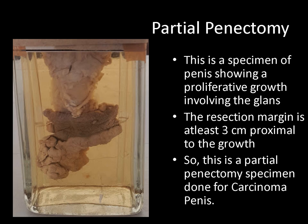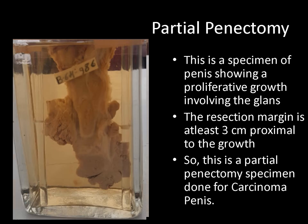The next specimen is a specimen of penis showing a proliferative growth involving the glans. If you turn the specimen, you will see very clearly that the resection margin is at least 3 cm proximal to the growth. And hence I call this as a partial penectomy specimen done for carcinoma of the penis.